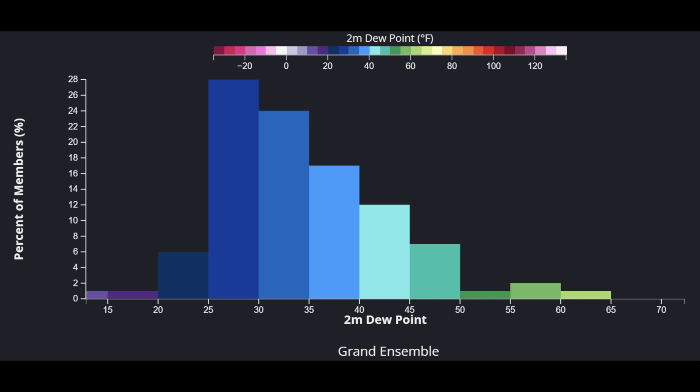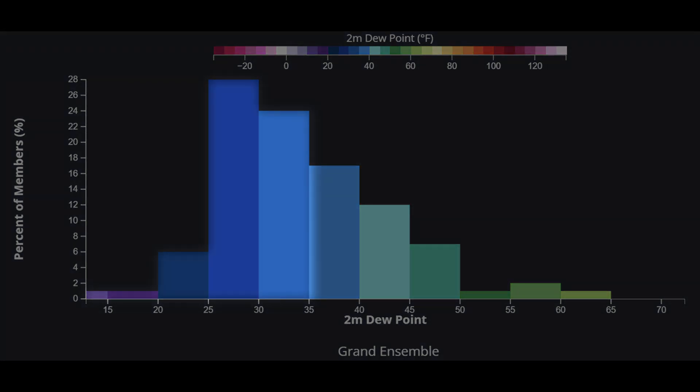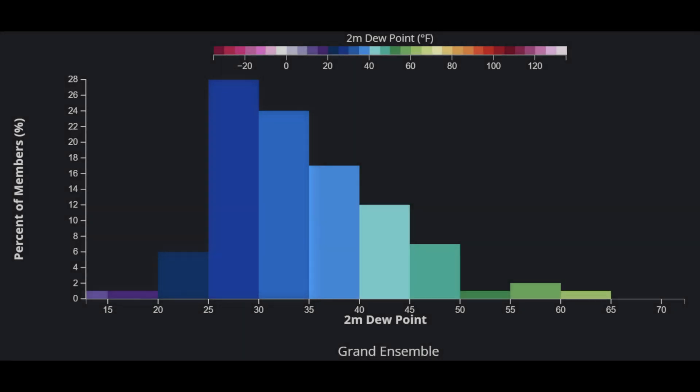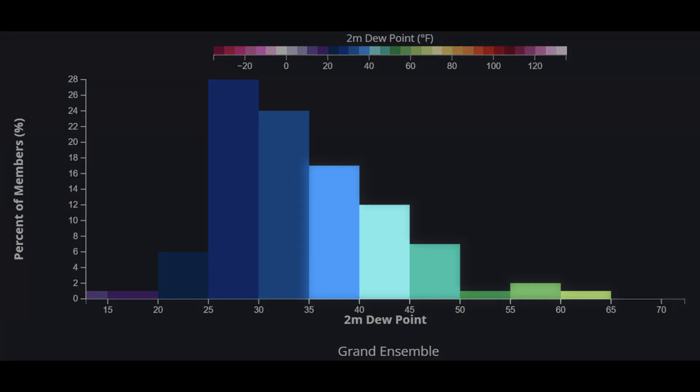In this example, we're looking at 2 meter dew points for Wichita Falls, Texas. In this time frame, the reason for the right skew was that the Grand Ensemble was struggling with the position of the dry line. The majority of members, about 60%, had dew points at or below 35 degrees for this day, indicating the dry line over or east of the station. But the remaining 40% had dew points above 35 degrees and the tails of the distribution at or above 50 to 55 degrees.